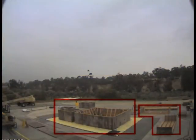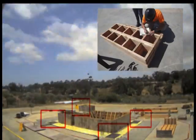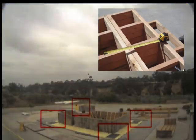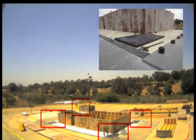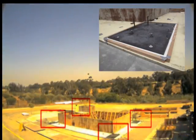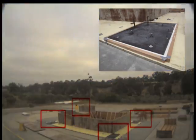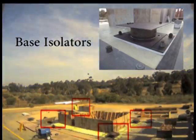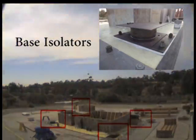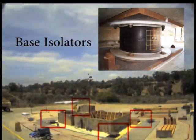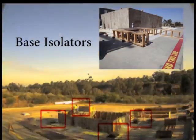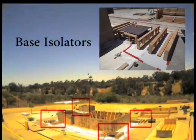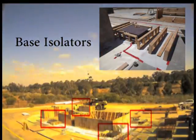Unlike traditional building construction, box elements were fabricated at each edge of the foundation to block the concrete from filling the space where the base isolators would eventually be installed. Base isolators are used to cease the shaking of structures when seismic forces are applied to them and, consequently, to reduce the damage to structural and non-structural components of the structure.